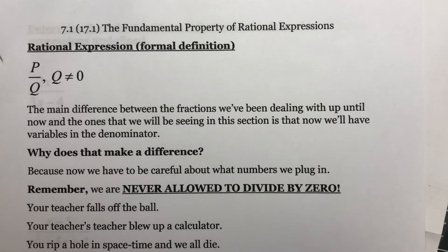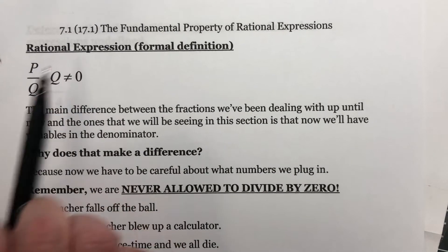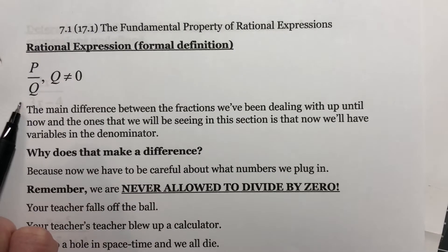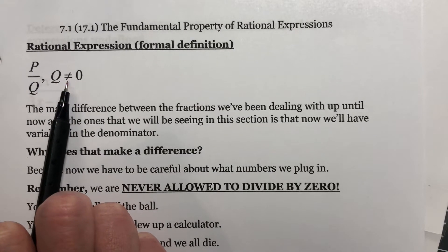This section itself feels like a whole lot of little topics. They're all important in the end, but it is going to feel like we jump around a bit. First of all, some formal definitions. A rational expression is something like P over Q, where Q is not equal to zero.